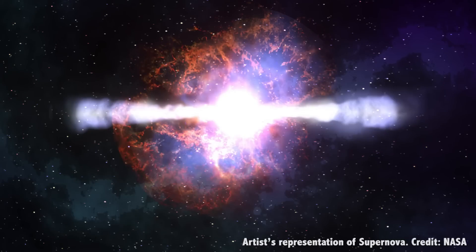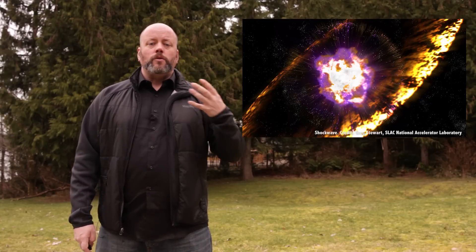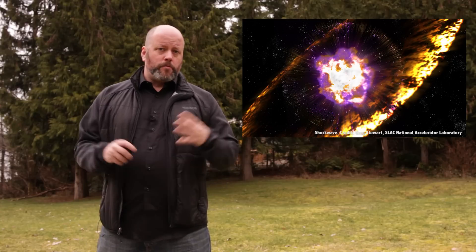The outer edges of the core collapse inward at 70,000 meters per second, which is about 23% the speed of light. So it's just a quarter of a second. In-falling material bounces off the iron core of the star, and creates a shockwave of material that propagates outward.